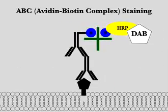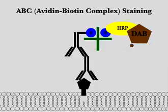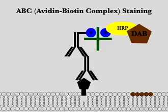The DAB precipitate stains the tissue brown in the vicinity of the antigen. By this method, the location of specific antigens in tissue can be visualized.